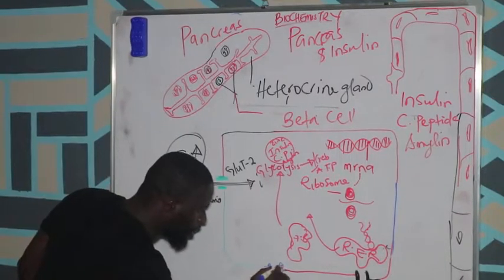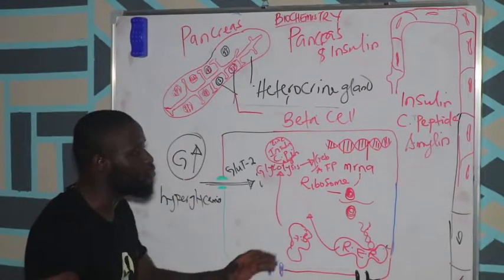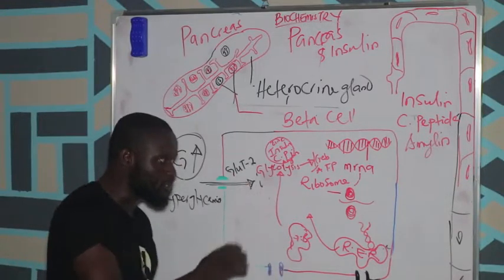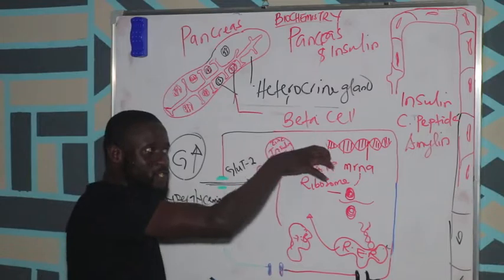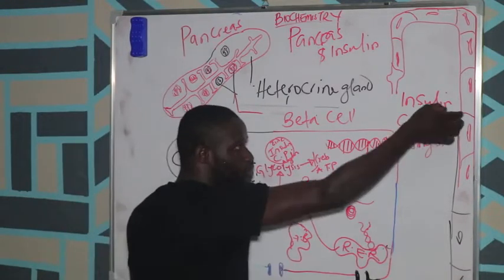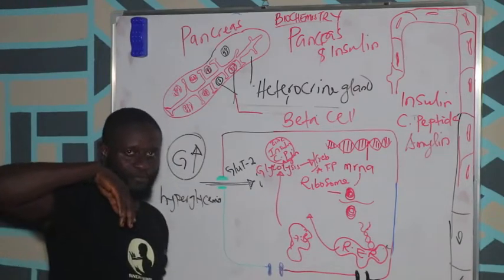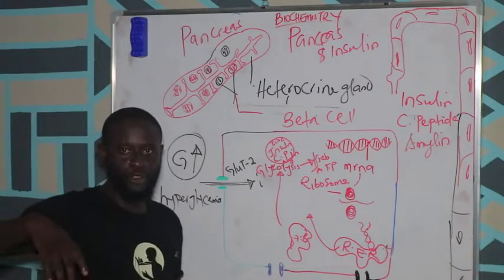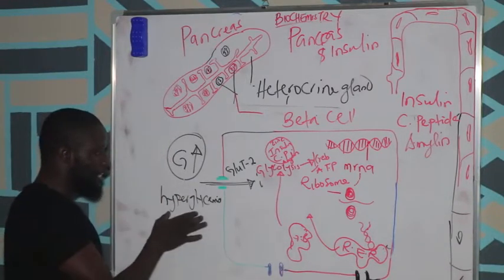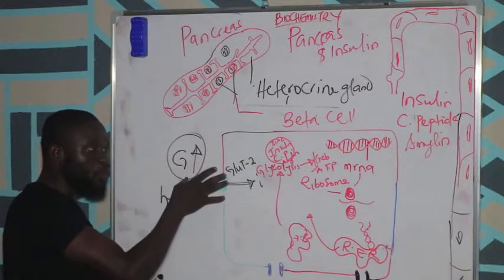Now we understand how insulin is being produced, but how do we get it into the bloodstream so that it can be used by different organs like the liver, the adipose tissue, and even the muscles? An increase in glucose in the blood triggers beta cells to produce insulin.